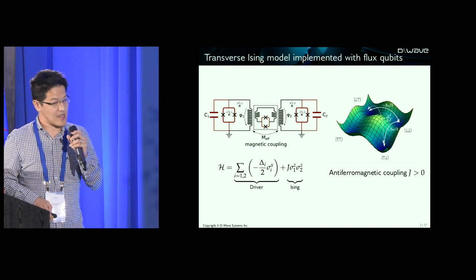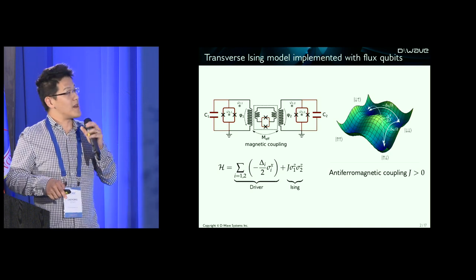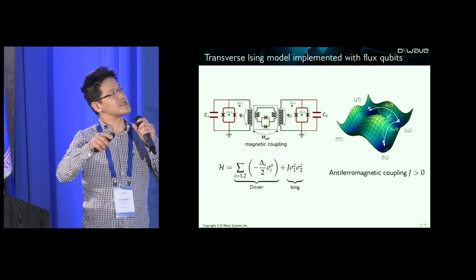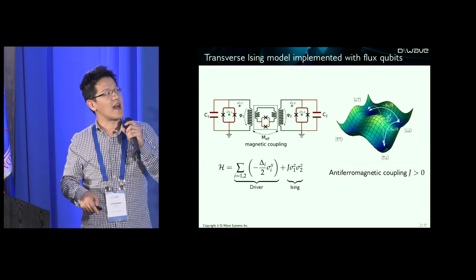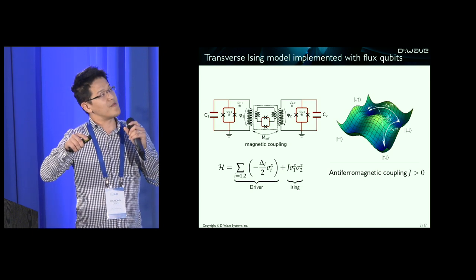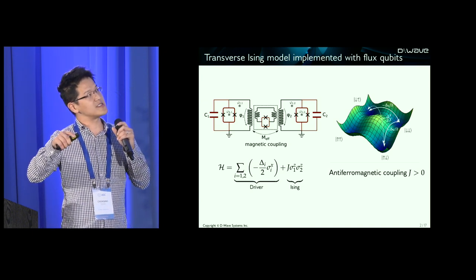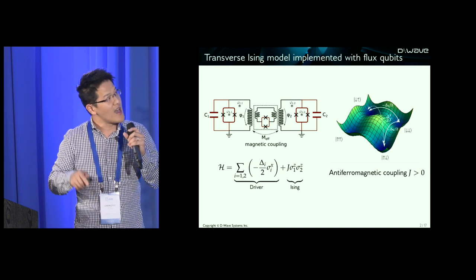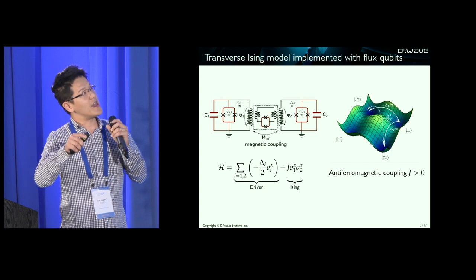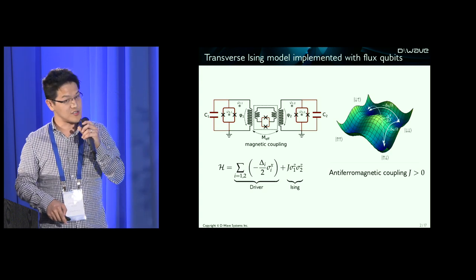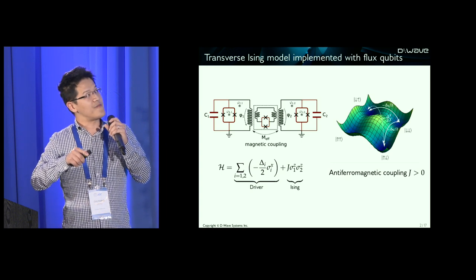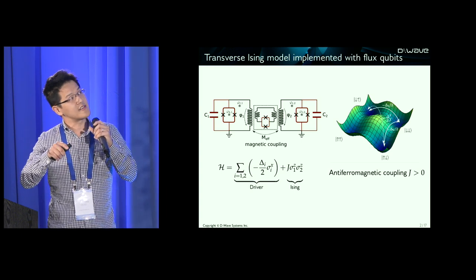The dynamics of this system can be understood in an effective 2D potential where the four local minima are from the computational basis of our system. Because in this driver Hamiltonian we only have single-qubit tunneling, we effectively should have hoppings between these two wells and these two wells. However, if we actually bias the coupler in the antiferromagnetic coupling regime — J greater than zero — we have the two antiferromagnetic configurations as near-degenerate ground states. Using perturbation theory, we find there will be effective two-qubit co-tunneling terms arising from mediated single-qubit tunnelings. The magnitude of these co-tunneling terms is delta squared divided by two J with a minus sign in front.